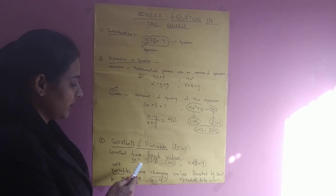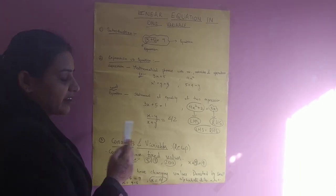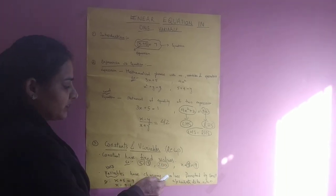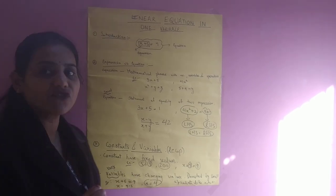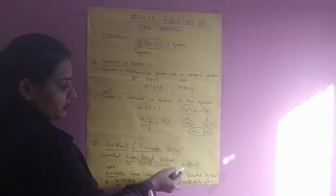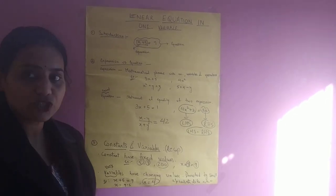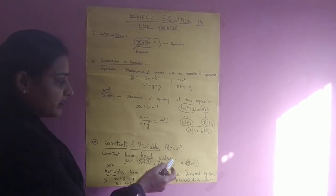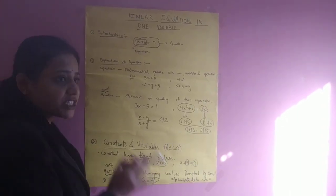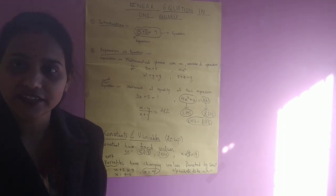See here: 5, 9, 200. These all have fixed values. This is an equation: x plus 5 equals 9. Here 5 and 9 have fixed value, so they are known as the constant.